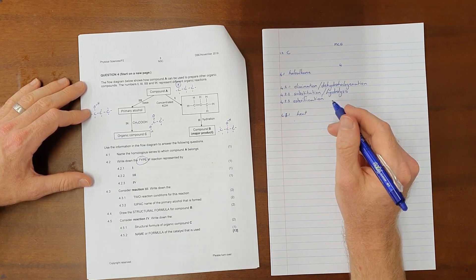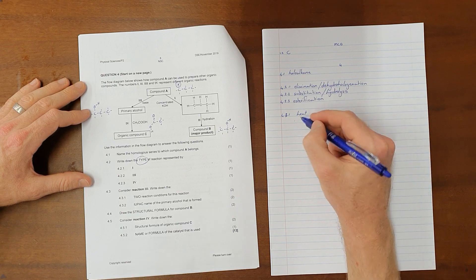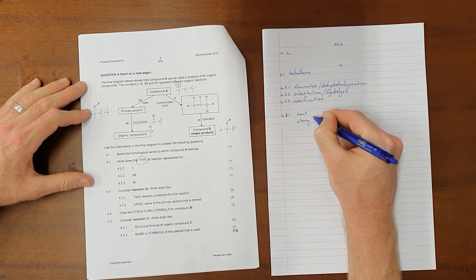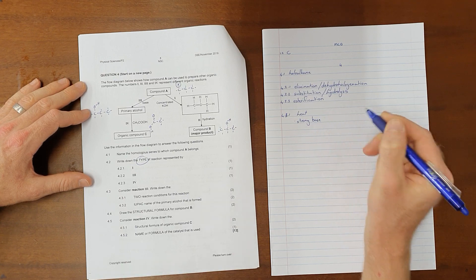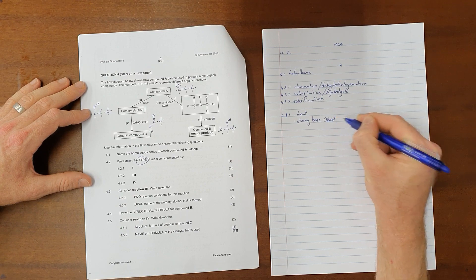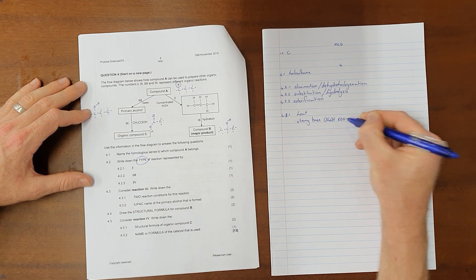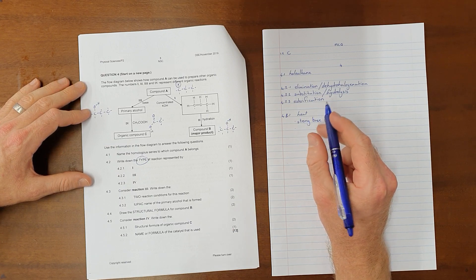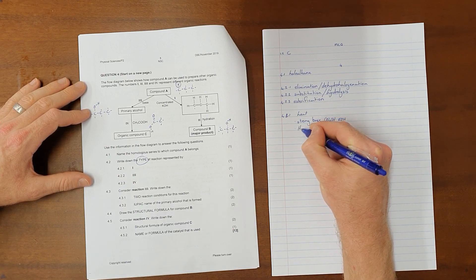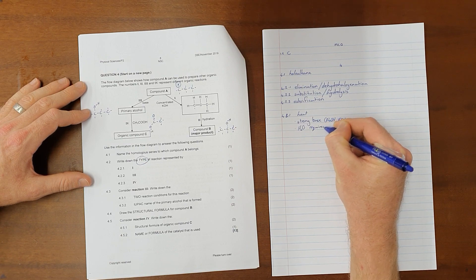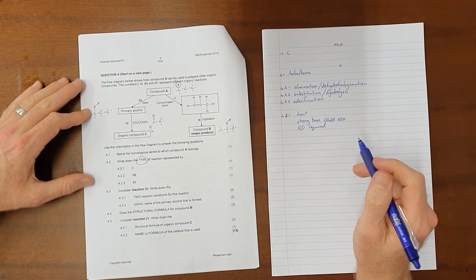The strong base would usually be sodium hydroxide or potassium hydroxide, although that's not necessary to state here. And the third condition that is accepted is that H2O is required. Again, the question only asks for two conditions, so only give two of those conditions.